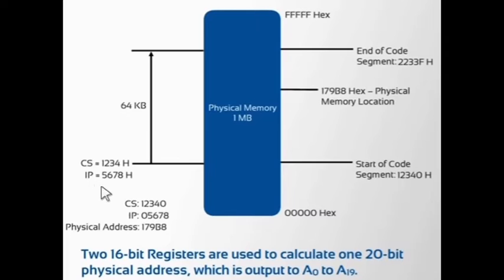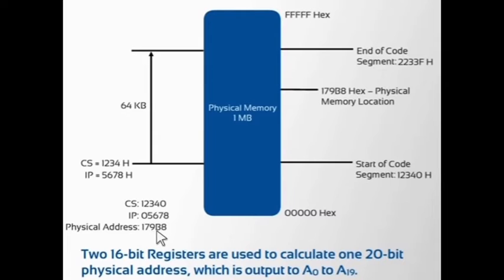it is a 16-bit register which identifies the location of the next word of instruction code to be fetched in the current code segment. IP contains an offset instead of the actual address of the next instruction. The 20-bit address produced after addition of the offset stored in IP to the segment base address in the code segment is called the physical address of the code byte.